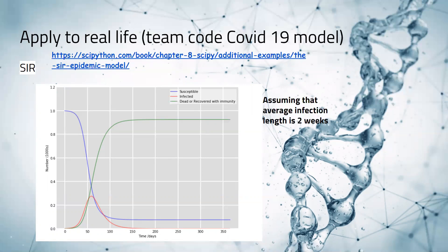Looking at the SIR graph, the susceptibility of the population decreases drastically over time because of the immunity developed by those infected who survive. The green line shows people who have recovered with immunity and people who died from the disease, both of which curb the spread of the virus. The number of susceptible people decreases as the green line increases, and the number of infected peaks at the same time they intersect.